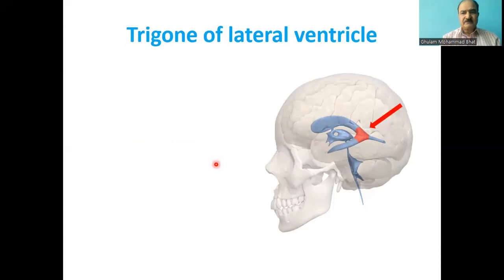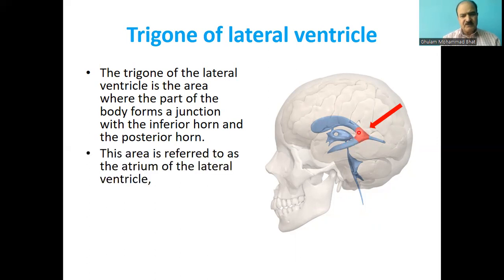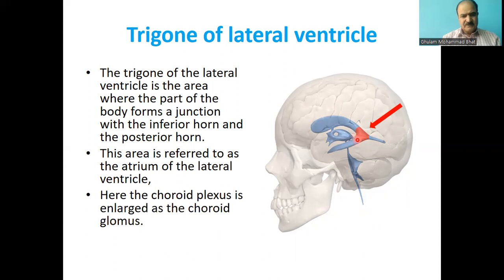The trigone of the lateral ventricle is the area where the body forms a junction with the inferior horn and the posterior horn — it is triangular in shape. This area is also referred to as the atrium of the lateral ventricle. Here the choroid plexus is enlarged to form a structure called the choroid glomus.